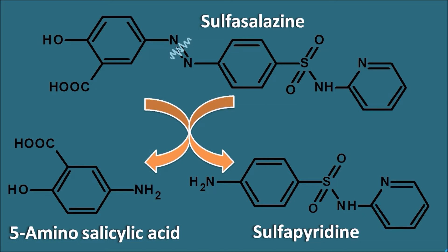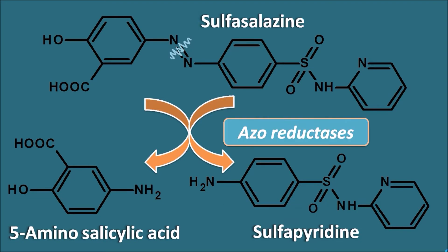This cleavage of sulfasalazine is mediated by the gut flora - the bacteria present in the gut. These bacteria produce an enzyme, azo-reductase, which cleaves sulfasalazine into 5-aminosalicylic acid and sulfapyridine. Here, 5-aminosalicylic acid produces anti-inflammatory action, and sulfapyridine also proves some beneficial action in case of rheumatoid arthritis.